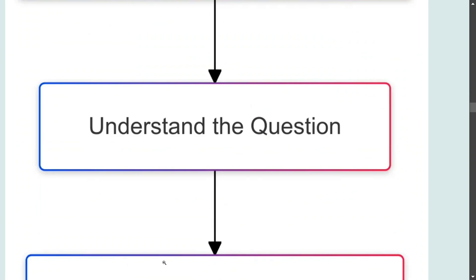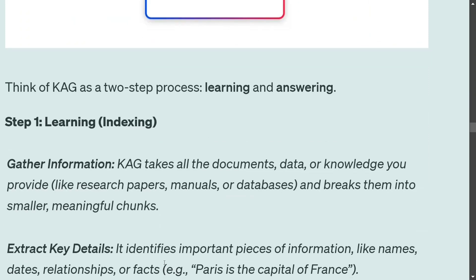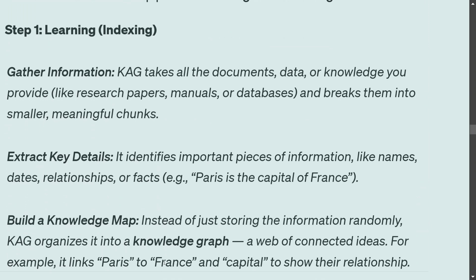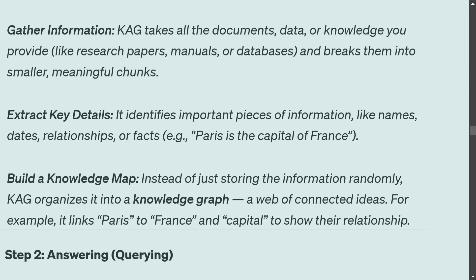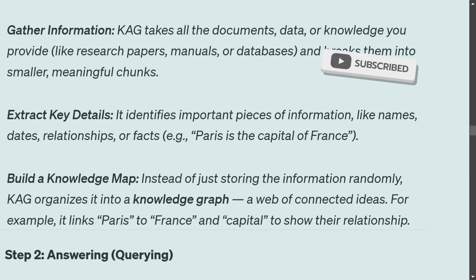Now the key question: how does CAG work? There are two major steps — learning and answering. In the learning step, first you gather information: take all documents, data, and knowledge provided, and break them into meaningful chunks. Then extract key details from those chunks. Finally, instead of storing information randomly, organize it into a knowledge graph — a web of connected ideas.